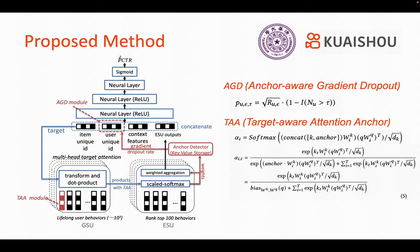To solve this problem, we propose two modules. The first is Anchor via Gradient Dropout, which perturbs the gradients of the user's unique embedding to weaken its memorization and forces the model to learn information from behavior sequences.